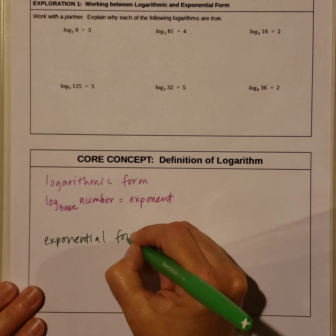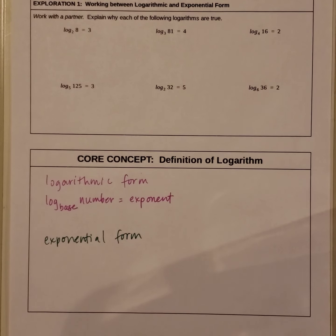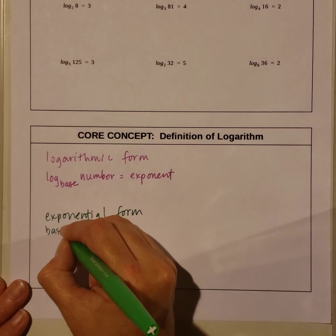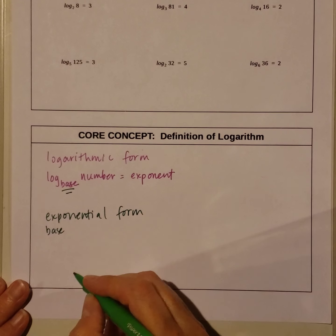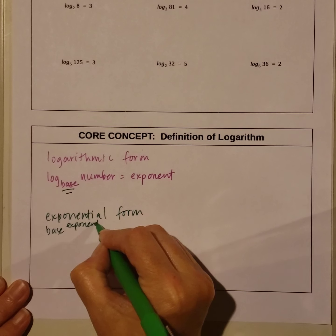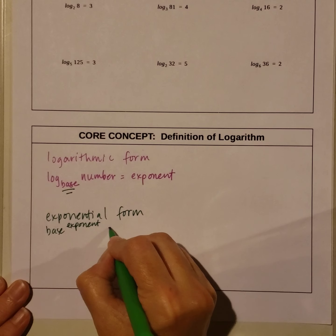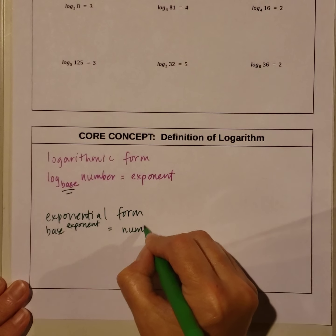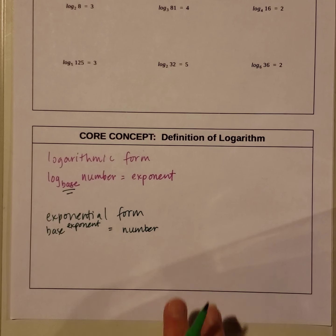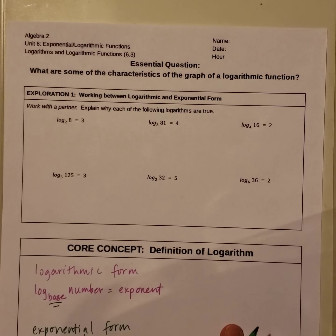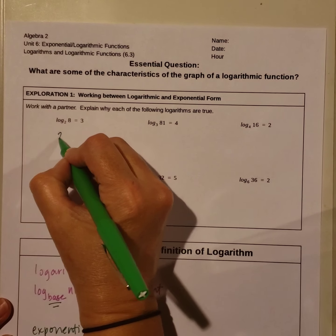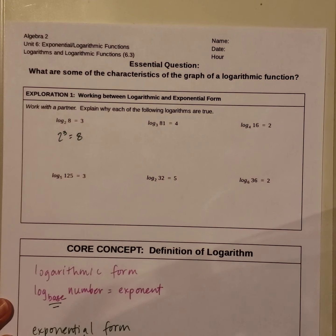Exponential form is taking the base — what we see here — raising it to the exponent, and it's equal to the number. You should have seen, up top, in exponential form: 2 to the 3rd equals 8. That's a true statement.